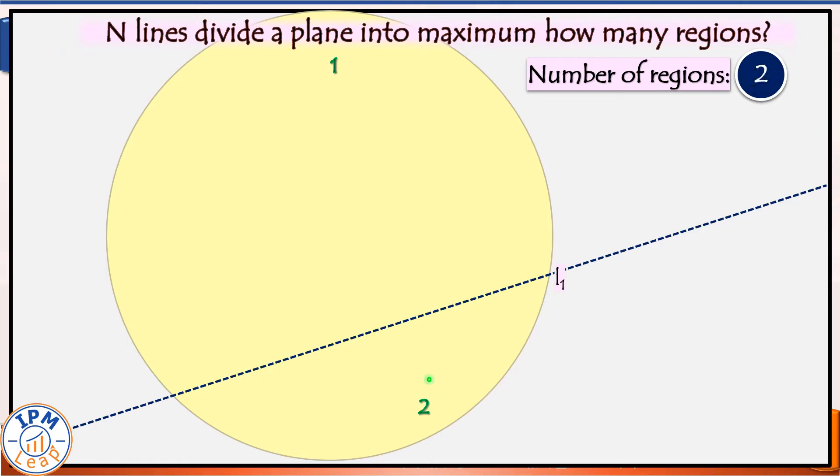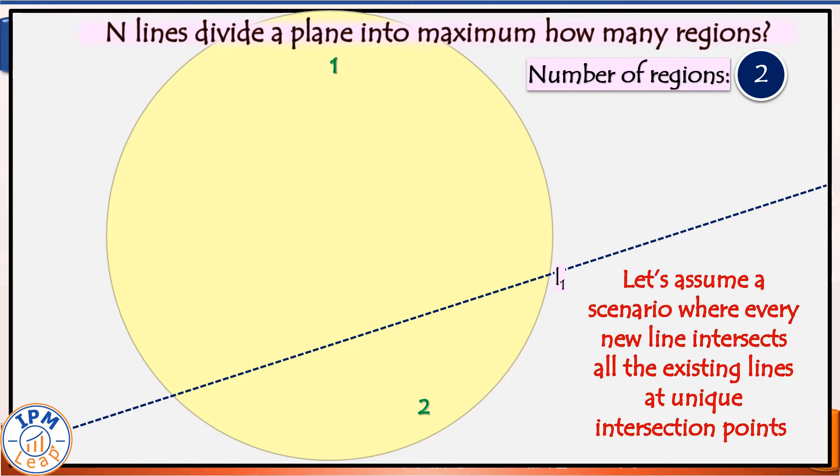Let us assume a scenario where every new or we can say every subsequent line intersects all the existing lines at unique intersection points. When we draw the second line, it passes right through these two regions, dividing both into two parts, thereby increasing two more regions in this plane.